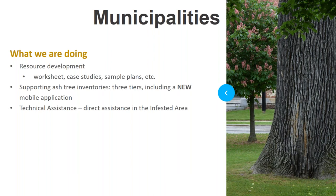We are doing a lot of outreach, trainings, and public meetings — staff from Forest Parks and Recreation and the Agency of Agriculture are tag-teaming to ensure people have plenty of opportunities to learn about EAB. Our annual grants program will be entirely focused on emerald ash borer planning, preparedness, and management this fall. If you're not signed up for our Tree Mail quarterly email, that's a great way to stay in the loop about grants deadlines and program updates.